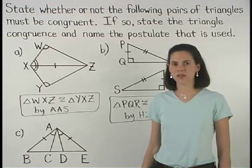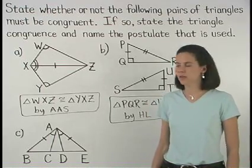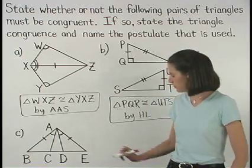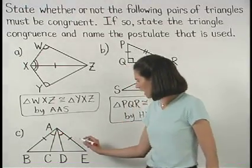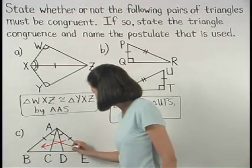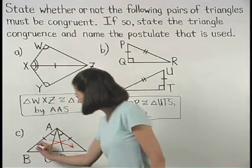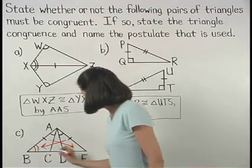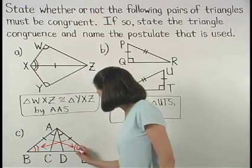Remember that the isosceles triangle theorem states that if two sides of a triangle are congruent, then the angles opposite those sides are congruent. So we know that angle B is congruent to angle E.